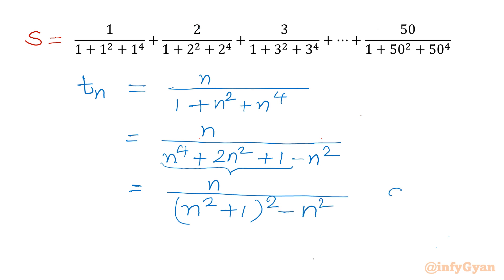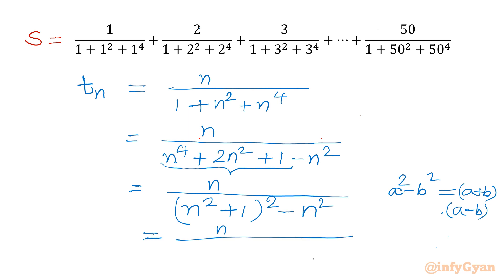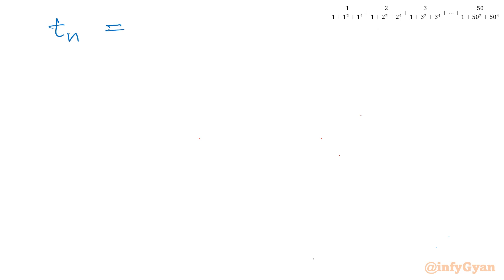Now I will use the identity a² - b² = (a+b)(a-b). So the denominator factors as (n²+1+n)(n²+1-n), giving us Tn = n / [(n²+n+1)(n²-n+1)].